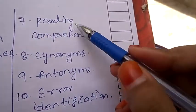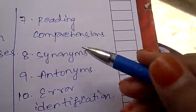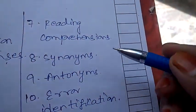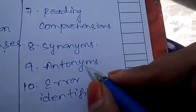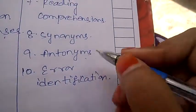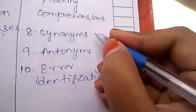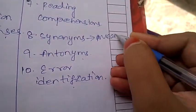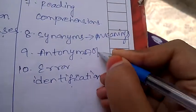Reading comprehension. In reading comprehension, they'll be giving you a paragraph. You need to read that paragraph and answer the given questions. And synonyms, antonyms, error identification. Synonyms means meanings, antonyms means opposites.